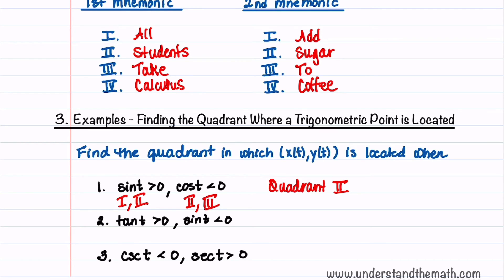In the second problem, tangent t is positive, so that can happen in quadrants one and three. And then sine t is negative, and that happens in quadrants three and four. So the quadrant common to both of those is quadrant three.